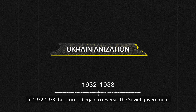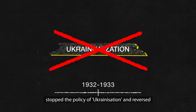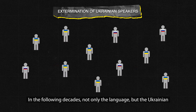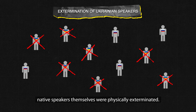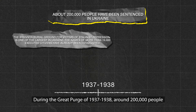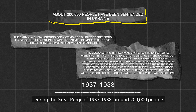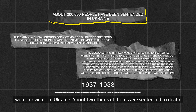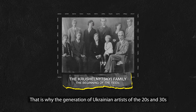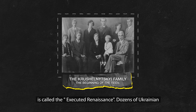In 1932 to 1933, the process began to reverse. The Soviet government stopped the policy of Ukrainianization and reversed course to persecution of Ukrainians. In the following decades, not only the language but the Ukrainian native speakers themselves were physically exterminated. During the Great Purge of 1937–1938, around 200,000 people were convicted in Ukraine, and about two-thirds of them were sentenced to death. That is why the generation of Ukrainian artists of the 1920s and 1930s is called the Executed Renaissance.